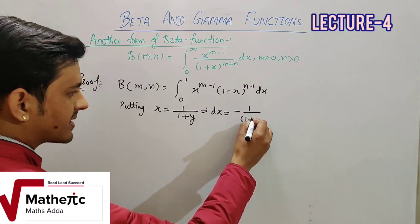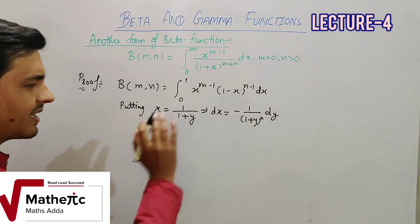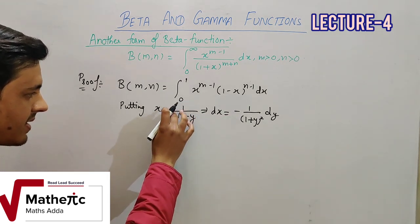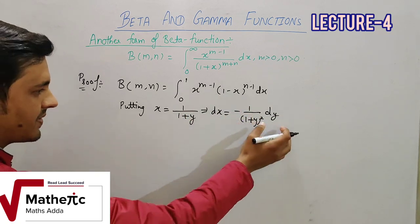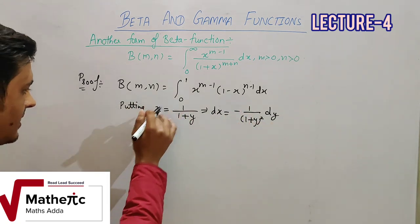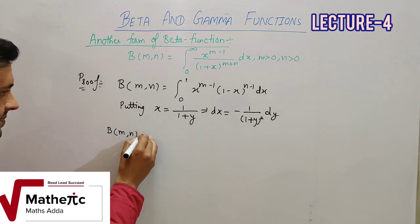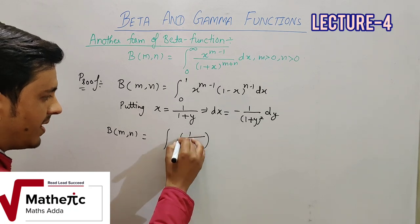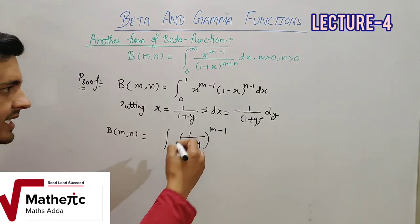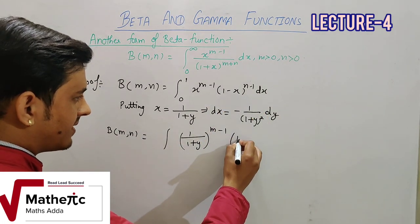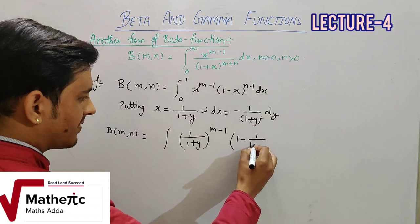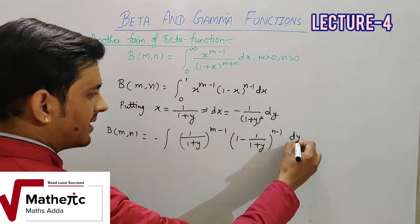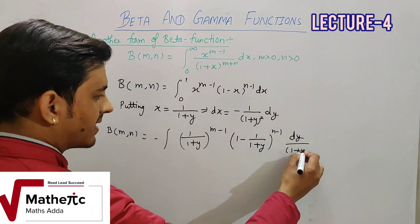इसको differentiate करेंगे तो dx = −1/(1+y)² dy। Beta(m,n) में x की जगह 1/(1+y)^(m-1), (1−x) की जगह [1 − 1/(1+y)]^(n-1), और dx की जगह −dy/(1+y)² आएगा।